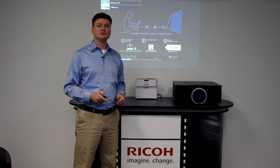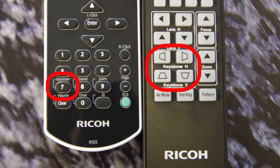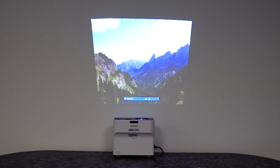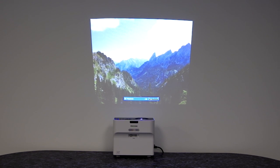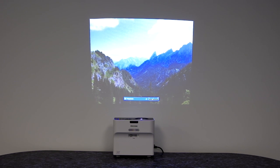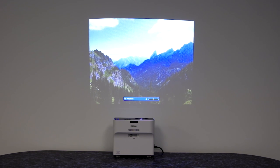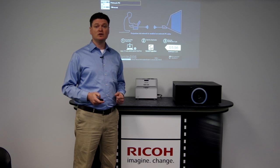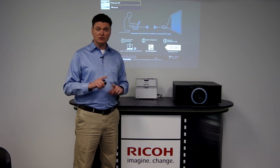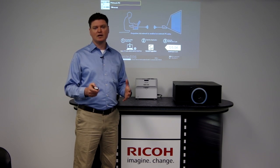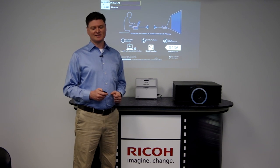With this function, if you're using a remote, simply locate the keystone button. After selecting it, use the arrow keys to adjust it in as desired. If you're not using a remote, locate the keystone function through the menu and make your adjustments as needed.